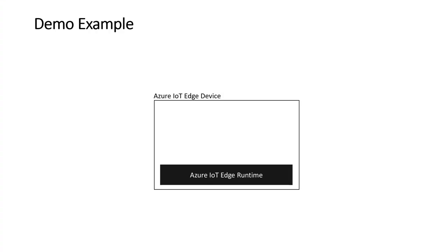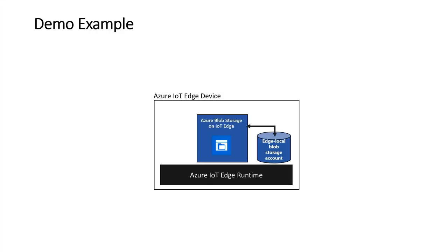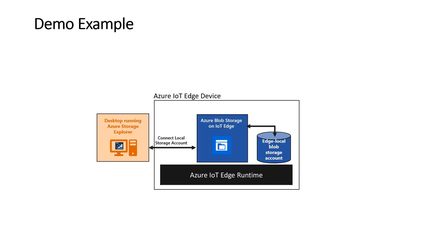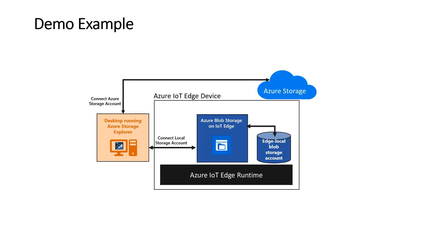How will we be doing it? We already have an Azure IoT Edge device running the Azure IoT Edge runtime. We will deploy Azure Blob Storage on IoT Edge module pointing to the Edge local Blob Storage account. We will install Azure Storage Explorer on a desktop and connect it to our local storage account and Azure storage account. Then we will upload data to our local Blob Storage account via Azure Storage Explorer and check out device-to-cloud upload in action. Sounds good? Let's get started.